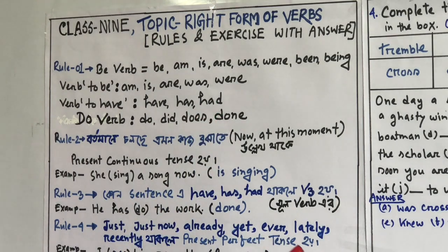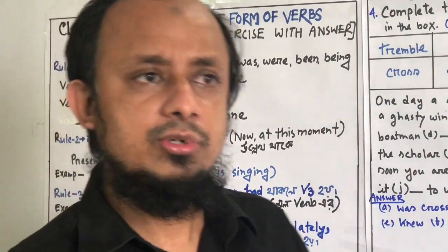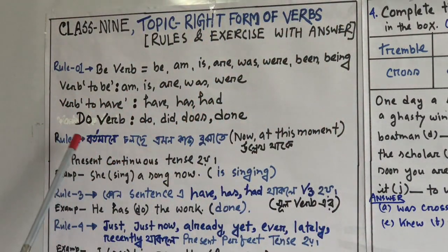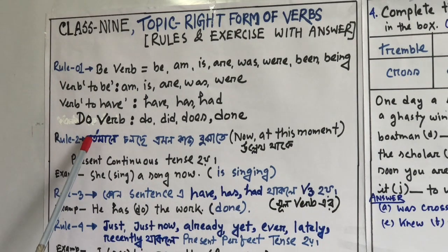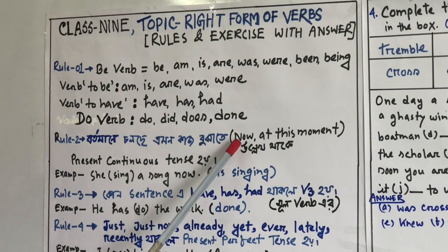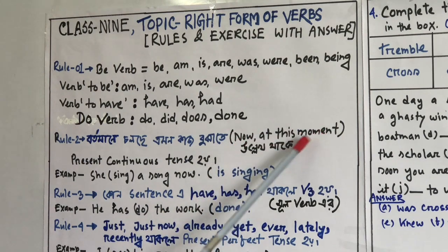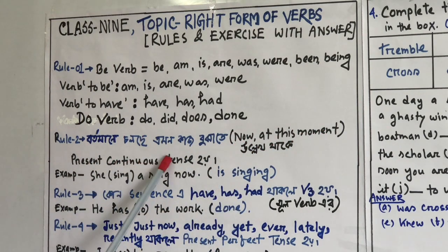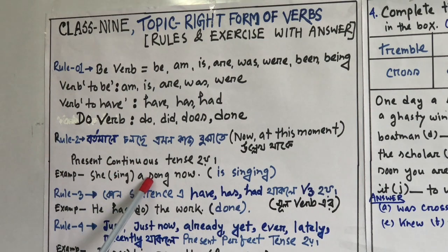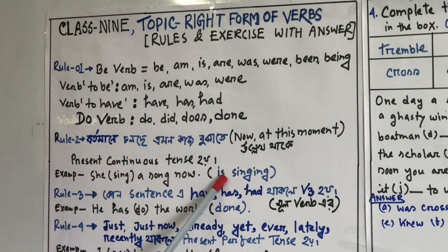So dear students, you can see how Rule 1 works. Now we will take Rule 2. Rule 2 — when the word 'now' is present in a sentence, you use the present continuous tense form. Example: 'She sing a song now' becomes 'She is singing a song now.'